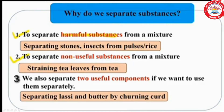The second reason is to separate non-useful substances from a mixture — for example, straining tea leaves from tea, since tea leaves are non-useful. The third reason is to separate two useful components when we want to use them separately — for example, separating butter and buttermilk from curd by the process of churning. Both buttermilk and butter are useful components. So these are the three important reasons for separating substances.